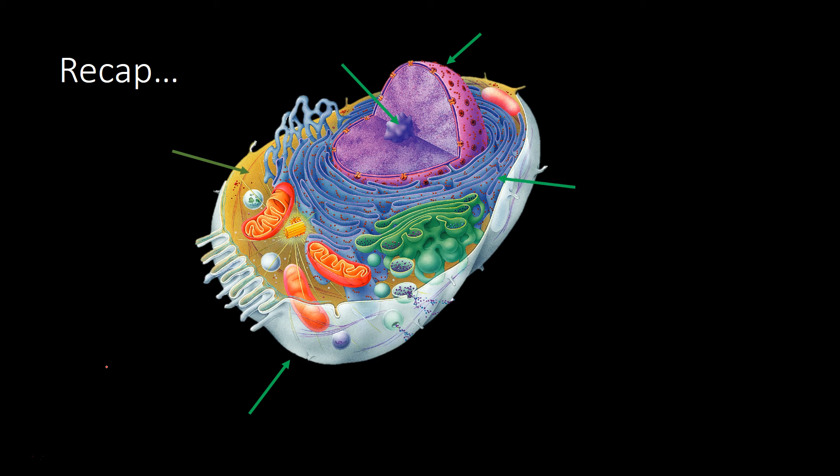Next, we talked about this continuation of the nucleus — these folds that are studded with ribosomes — and that's the rough ER. What does the rough ER do? It makes proteins. Followed by the rough ER, we have the smooth ER, which does not have ribosomes. The smooth ER has two main jobs: number one, it creates lipids; number two, it helps to remove toxins. The last thing we talked about were ribosomes — tiny little structures that help make proteins, found in the cytoplasm and studded on the rough ER.